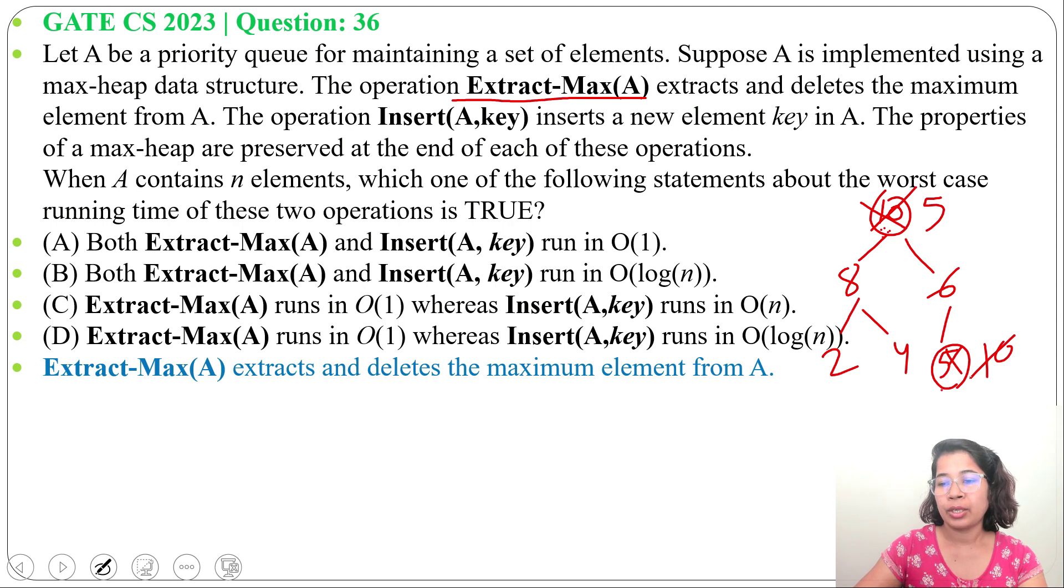Next, we will heapify this. For heapify, we check: is 5 greater than 8, 6? No. So we swap 5 with 8. Now 5 comes here, 8 goes here. 8 is the parent of 5 and 6, 5 is the parent of 2 and 4.